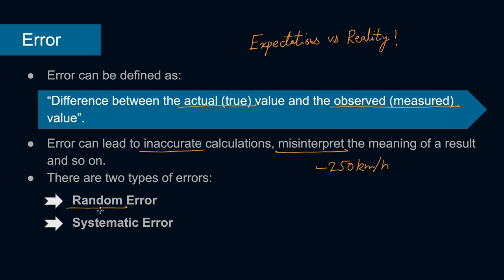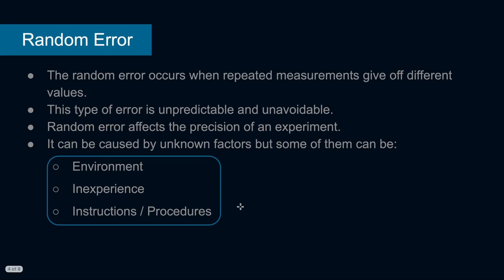There are many types of errors, but we can encapsulate them into only two categories: random error and systematic error. You can get an idea from the words themselves. Let's go to random error first. A random error occurs when repeated measurements give different values. Every time you measure something, the value is different.